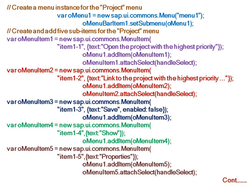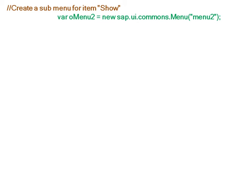So now in the project menu, we have five menu items. In the project menu, we have a menu item 'show'. For this show item, we will create a sub-menu. We will create a menu for show and add this menu to the show menu item.